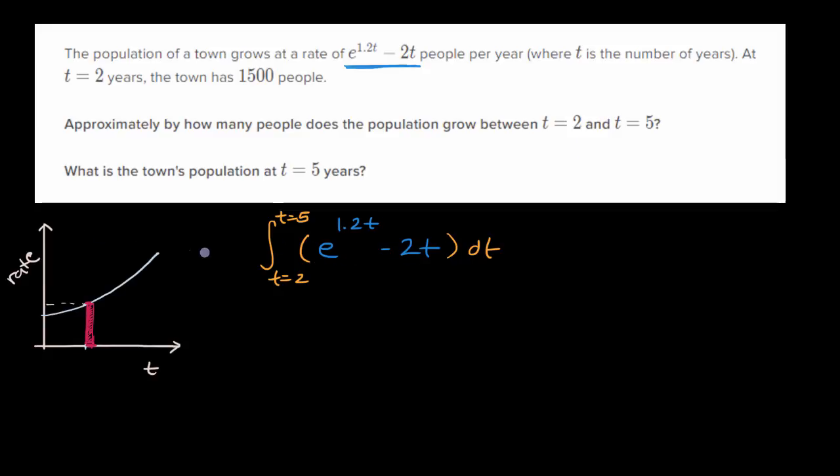So what is the antiderivative of e to the 1.2t? Let me write it as e to the six-fifths t. Say 12 tenths is the same thing as six-fifths, six-fifths t dt. So this is an indefinite integral. I'm just trying to figure out the antiderivative here. If I had a six-fifths right over here, then u substitution, the inverse chain rule would be very appropriate. We could put a six-fifths there if we write a five-six right over here. Five-six times six-fifths, and we can take constants in and out of the integral like this. So this is going to be equal to five-six.